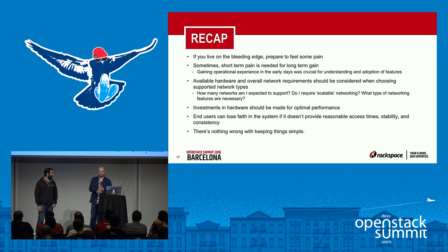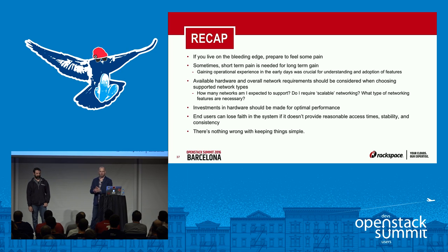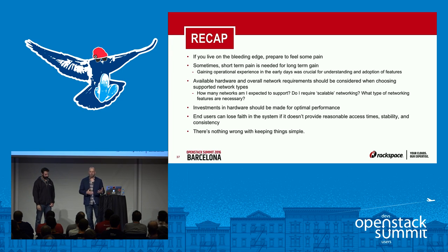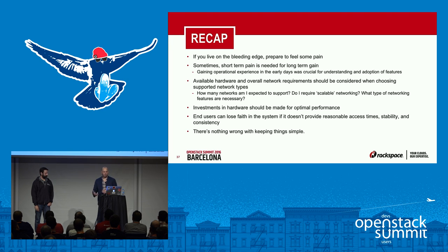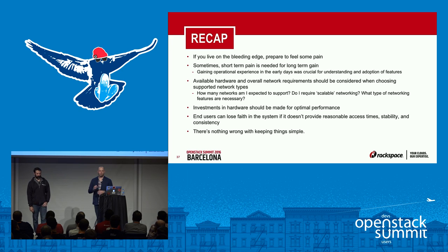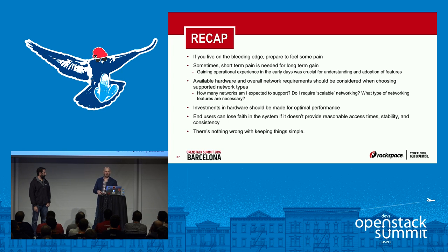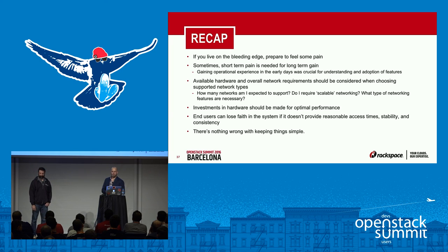Short-term pain is sometimes needed for long-term gain. Our adoption of those technologies early on gave us operational experience to know how we wanted to move forward. We feel we understand Open vSwitch a lot better now — had we adopted it later when it was much more complex, it may have taken far longer to get on board. Make sure your hardware meets your network requirements; upgrading to newer NICs to leverage these technologies is probably the way to go. Make investments in hardware accordingly. End users will lose faith and look elsewhere — to public clouds or away from OpenStack entirely — if the cloud doesn't provide reasonable access time, stability, and consistency. Keeping things simple when you don't need complexity saves operational time and provides a better experience.